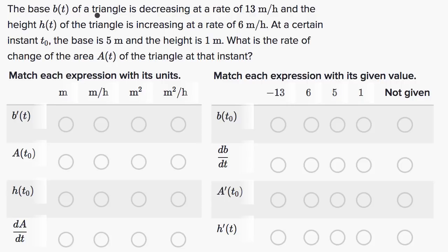The base B of T of a triangle is decreasing at a rate of 13 meters per hour, and the height H of T of the triangle is increasing at a rate of six meters per hour. At a certain instant T sub zero, the base is five meters and the height is one meter. What is the rate of change of the area A of T — our area is a function of T — of the triangle at that instant?